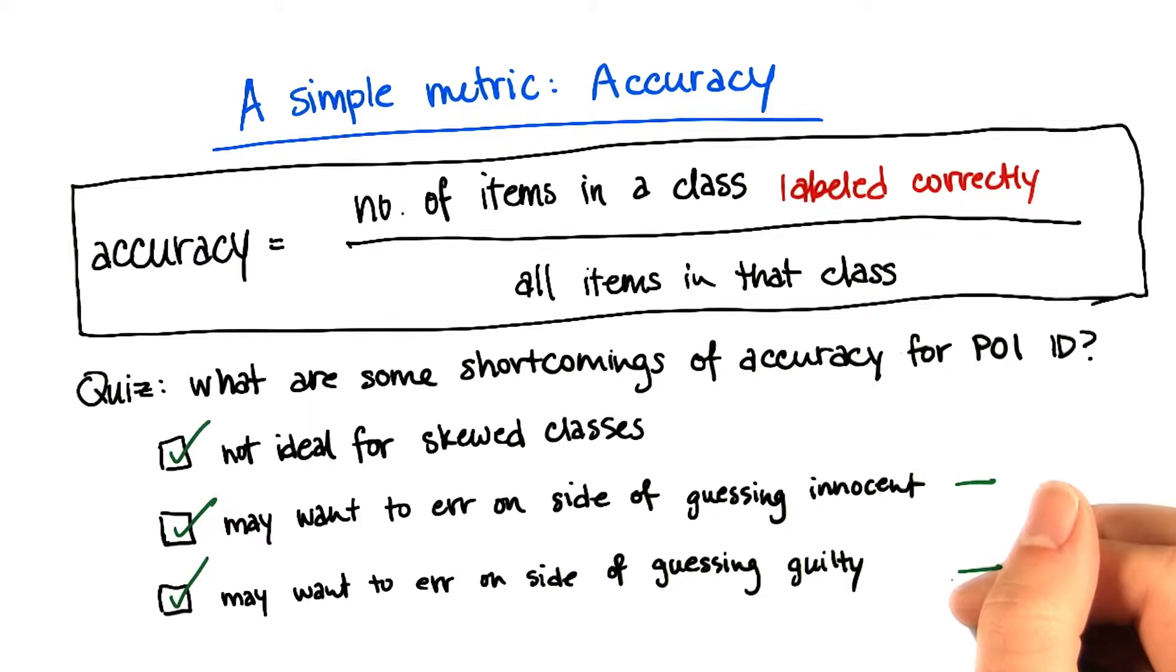Also, the second two options are things you want to think about. You want to pick a metric that's really tailored to the operation you're trying to do. As a result, you might want to maximize the chance that you err on the side of guessing that someone's innocent.